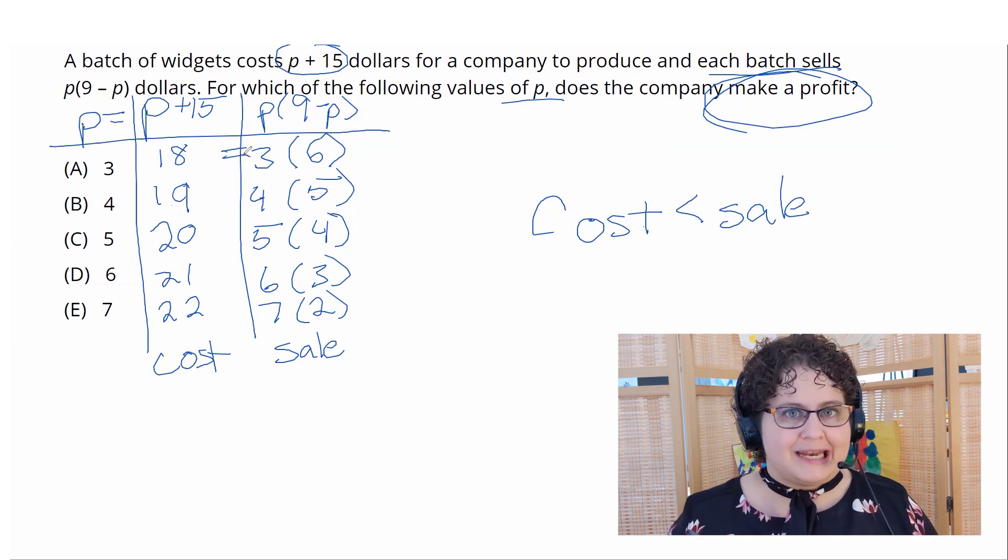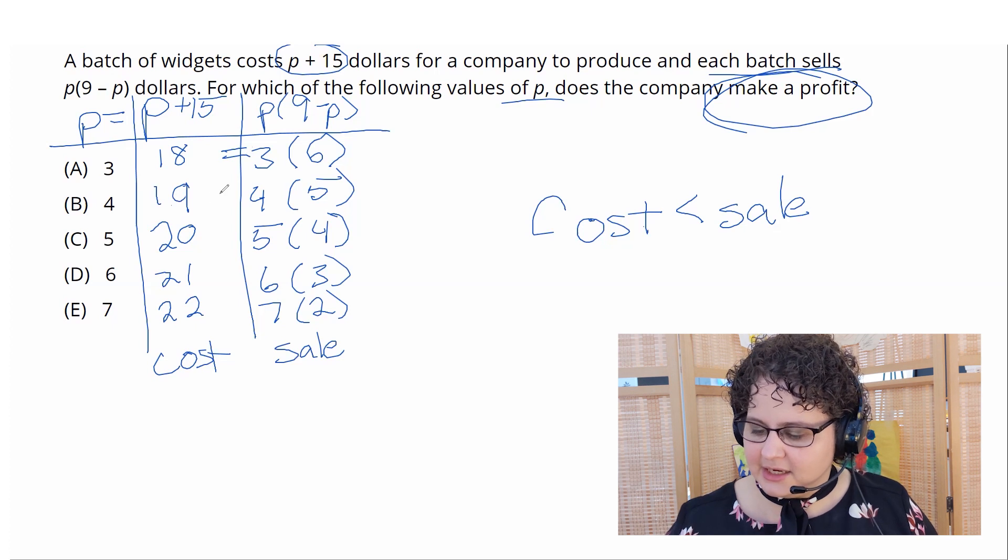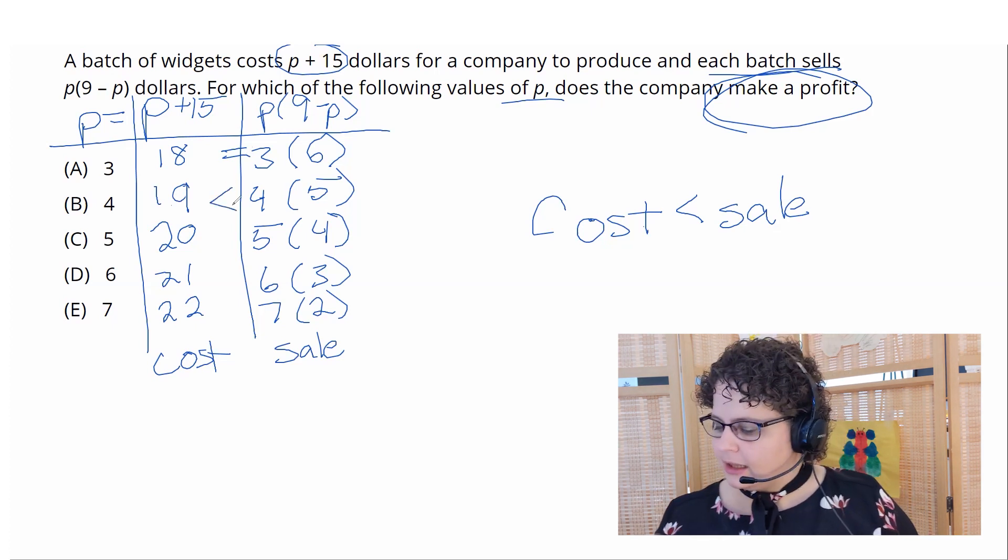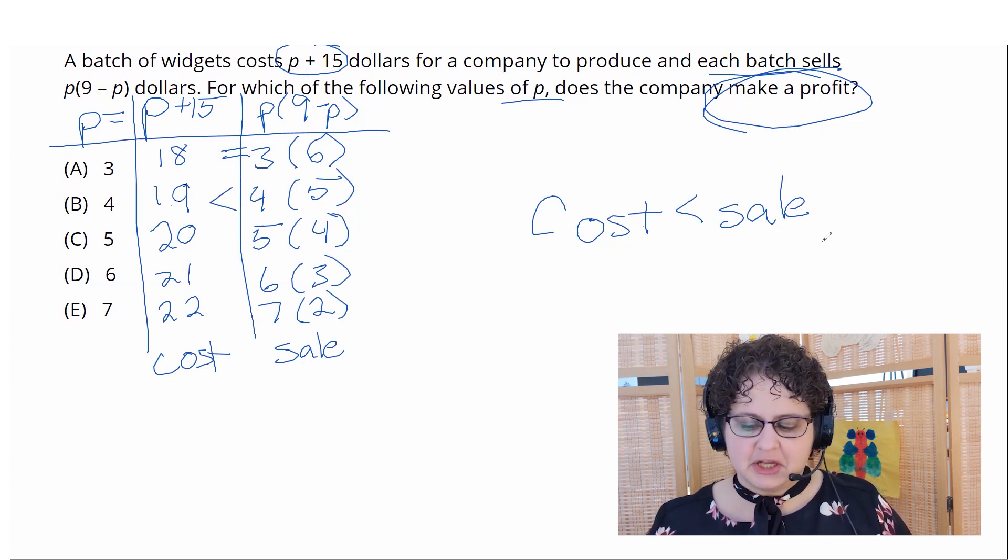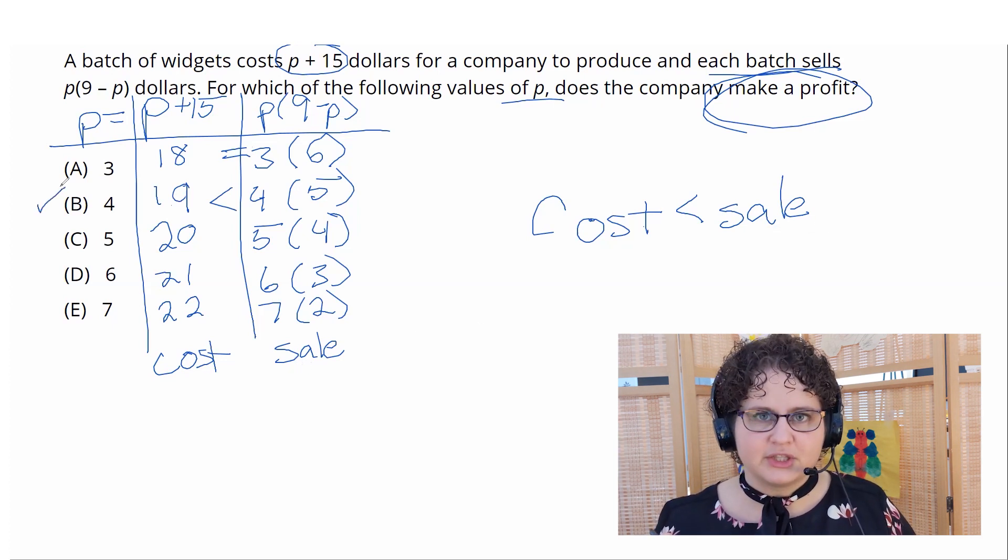For B, I'm comparing 19 to 20. 19 is less than 20. So looking at this, the cost is less than the sale price. I want my cost to be less than sale price. Okay, B is looking pretty good as the right answer. And honestly,